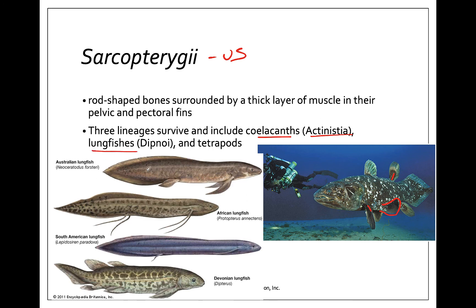The other group is the lungfish — Dipnoi — with six living species. We believe they arose in the ocean, but they are found only in fresh water today, living in stagnant ponds or swamps. They come to the surface and gulp air; they actually have lungs, which is why they're called lungfish, though they also have gills. They can burrow in mud during the dry season and estivate — a hibernation-like state with very low metabolism — until the rains of the wet season return.